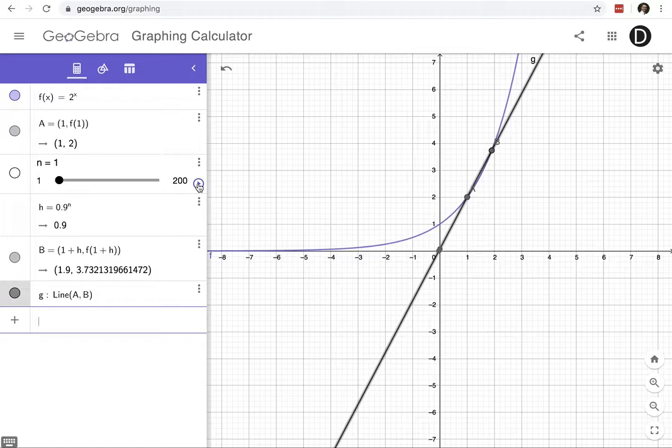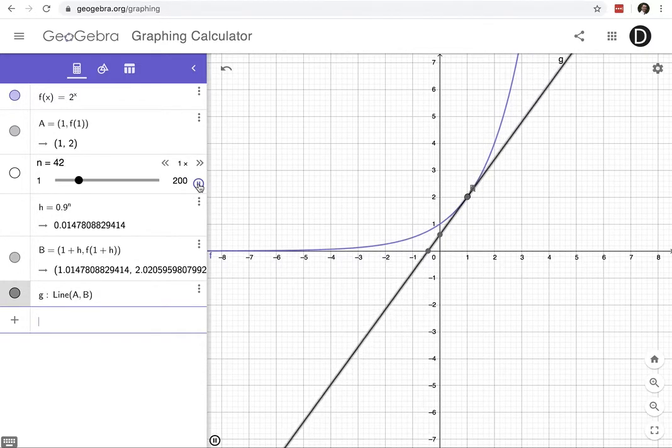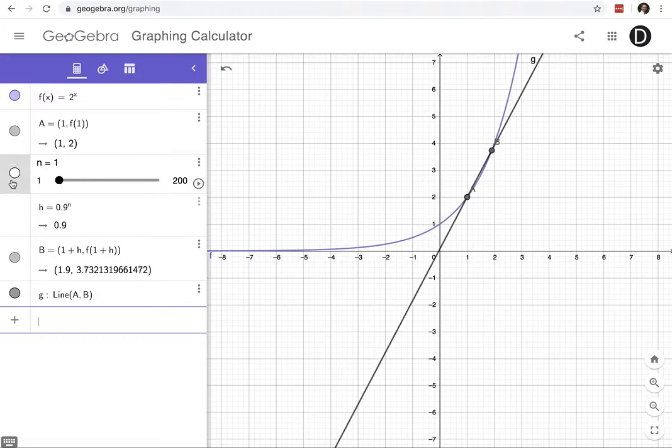So as I turn this player on and I let my n go towards infinity, so my h is getting closer and closer to zero, I can see that my two points are getting closer together. In fact, they're indistinguishable. They're only 2 times 10 to the negative 9 or something apart from each other.